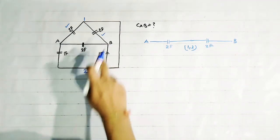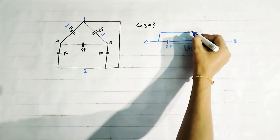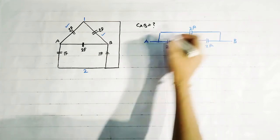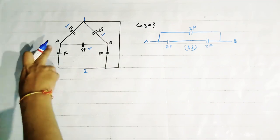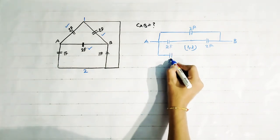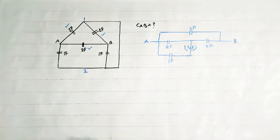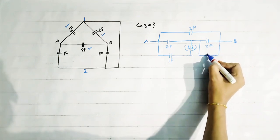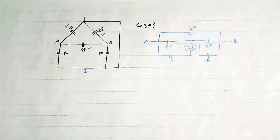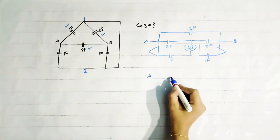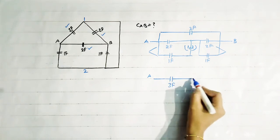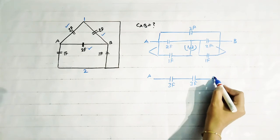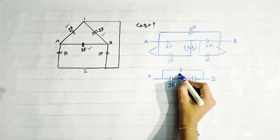Now see — this 2 Farad is connected between A and B directly. This 1 Farad is connected between A and 2, and this 1 Farad is connected between B and 2. So this is the simplified circuit. These two capacitances are in parallel and these two are in parallel, so they simply add. We get 3 Farad, 3 Farad, and 3 Farad. And this is point B with simply 2 Farad.